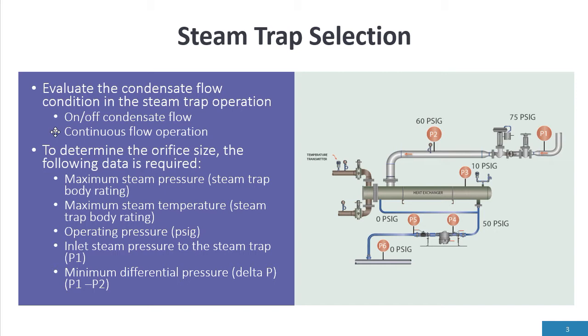The other thing is to determine the orifice inside the steam trap. We need to know the maximum steam pressure or body rating of that steam trap. At P1 we need to know what is the maximum pressure that can be applied to the system. So if the safety valve is set for 150 psi, the orifice inside the steam trap has to be rated for 150 psi.